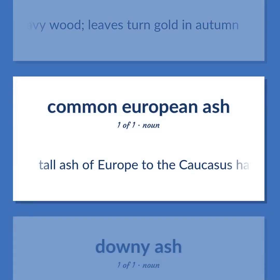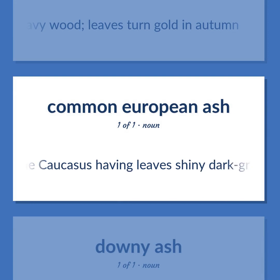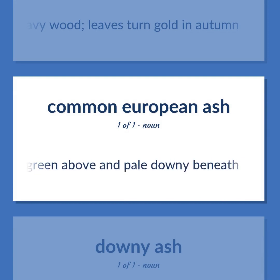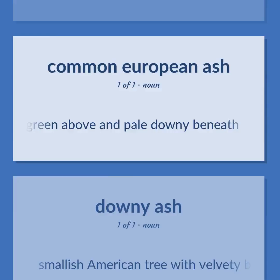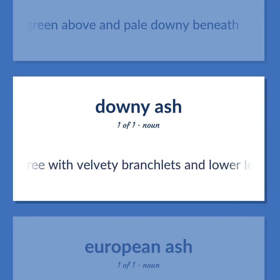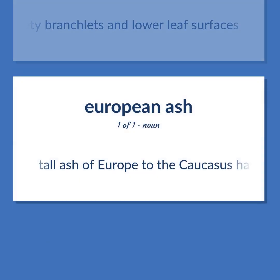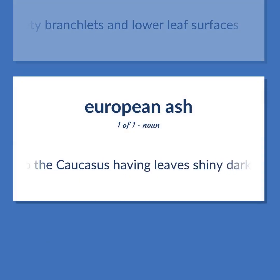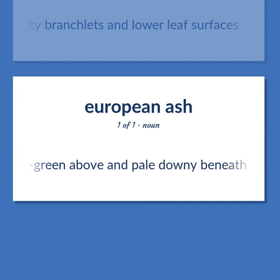Tall ash of Europe to the Caucasus having leaves shiny dark green above and pale downy beneath. Smallish American tree with velvety branchlets and lower leaf surfaces.